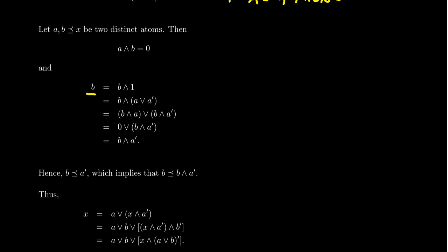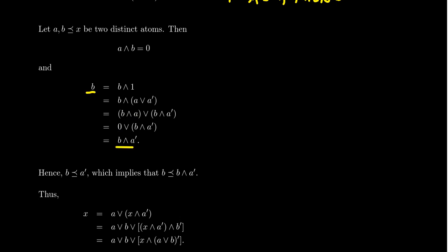Now, if B is an atom, then B equals B meet 1, and by complements, 1 equals A join A'. Distributing B, we get B meet A join B meet A'. Since A meet B equals zero, we get zero join B meet A', which simplifies to B equals B meet A'. Therefore B is less than or equal to A'. Since B ≤ B and B ≤ A', we have B ≤ B meet A' — i.e., B is less than or equal to their greatest lower bound.